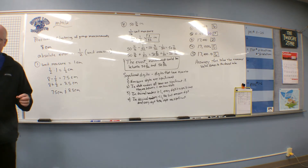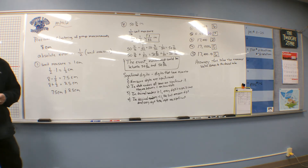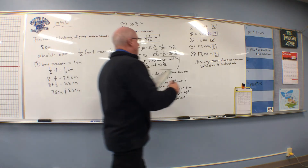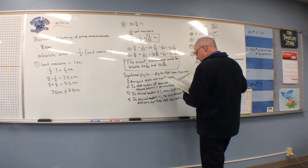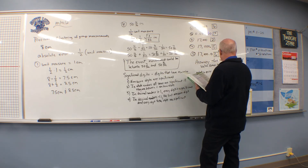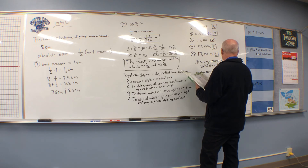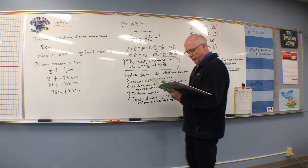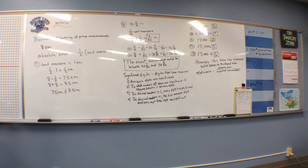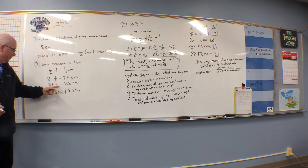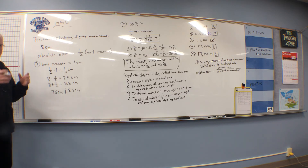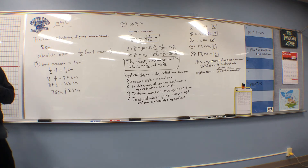Now we've already talked about absolute error. Now we're going to talk about relative error — you've got to know the difference between the two. Relative error equals the absolute error divided by the expected measurement — which is essentially the measurement they give you. We then convert relative error to percent by moving the decimal point two places to the right.